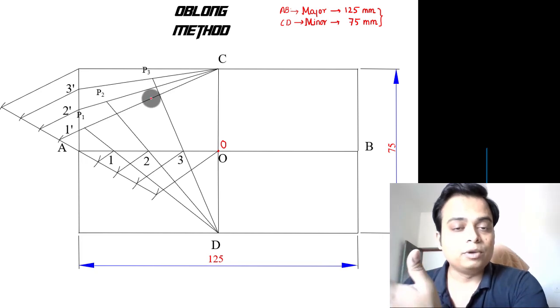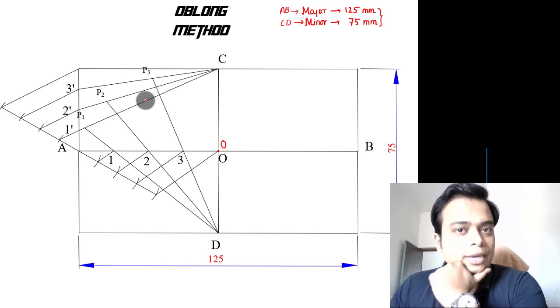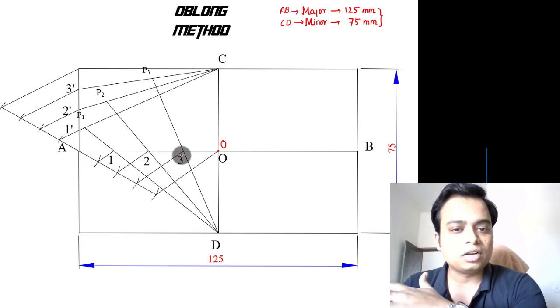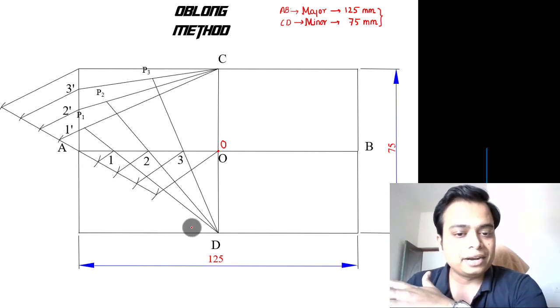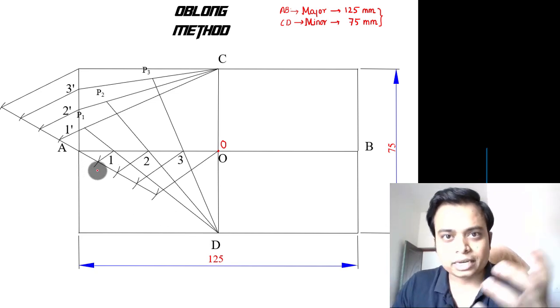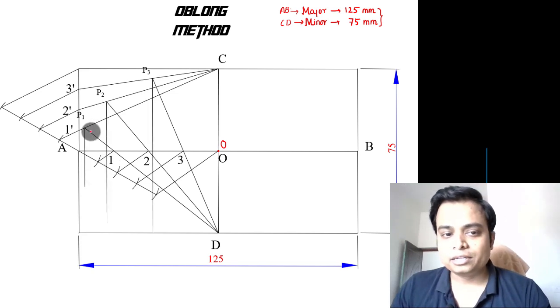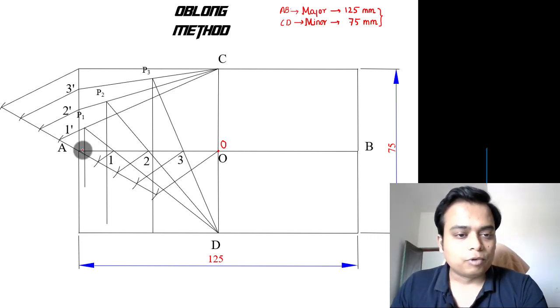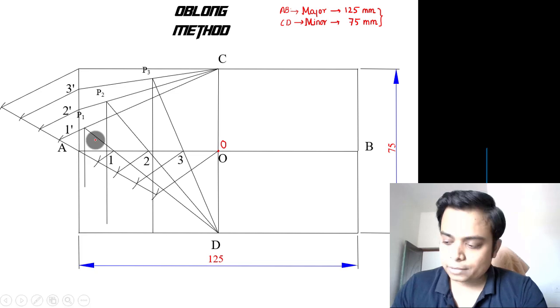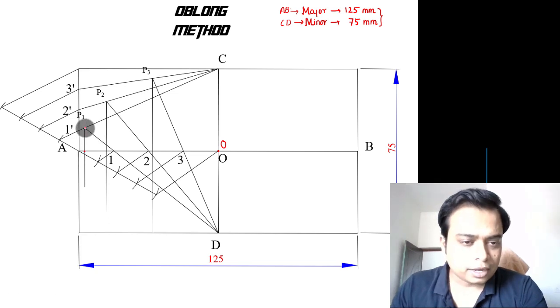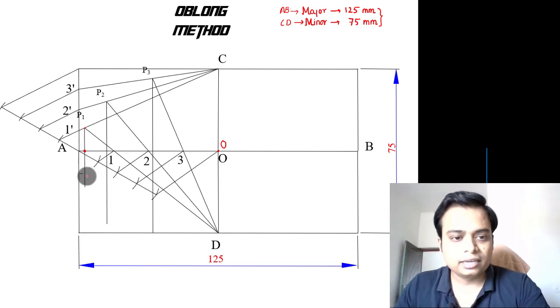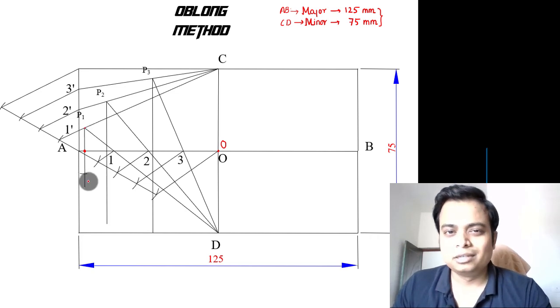The best possible way to approach this problem is to reflect these points about the horizontal axis so that all the points will be obtained along this quarter. We can draw vertical lines from all these points. Now keep one leg of your compass right over here and the other leg over here, and with that much amount as the radii, and again with this as the center, cut an arc. This is the reflection of point P1—you can write that as P1 dash.